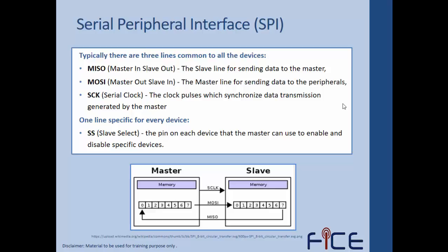Typically there are three lines common to all devices: MISO (Master In Slave Out), MOSI (Master Out Slave In), and SCK or SCL (Serial Clock). The MISO line is used by the slave to send data to the master. The MOSI line is used by the master to send data to peripherals. One additional line specific to each device is the Slave Select — the pin the master uses to enable or disable specific slave devices.